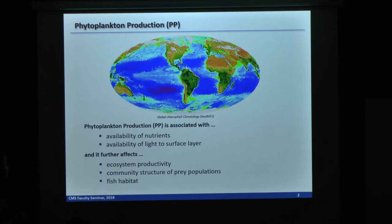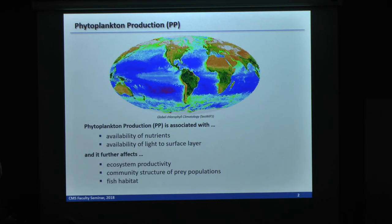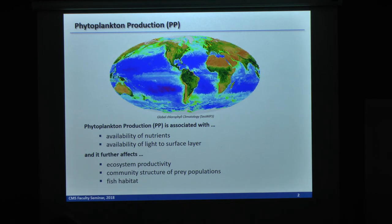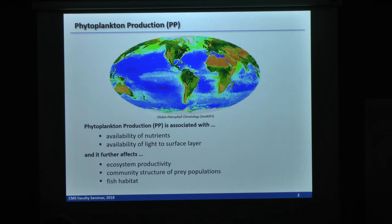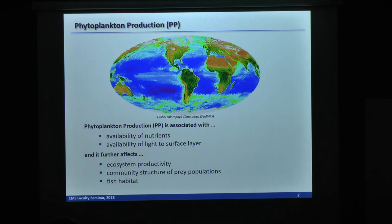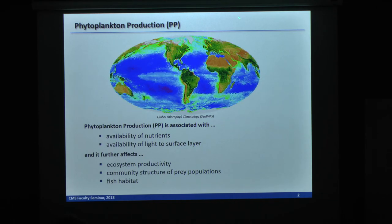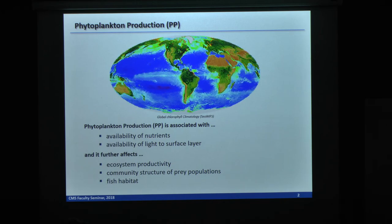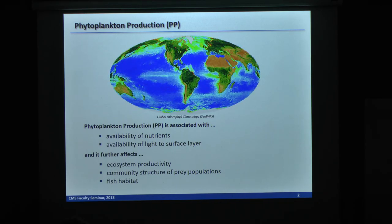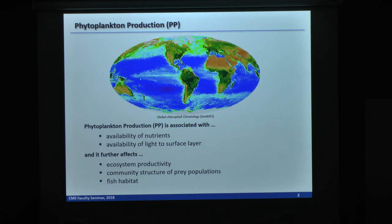This animation shows you the monthly evolution of global chlorophyll climatology. Here there are several pieces of information we can take. Looking at the spatial pattern, the red-pink color are high chlorophyll concentration while the blue color shows low chlorophyll.